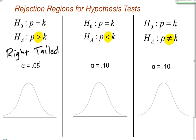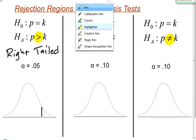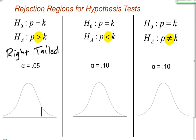When looking at this right-tailed test and trying to draw a picture of my rejection region, once I know it's a right-tailed test I can put a line right here that represents a cutoff point for my level of significance. This level of significance, alpha equals 0.05, is going to be the area inside the tail which creates my rejection region. This blue shaded region is called the rejection region.